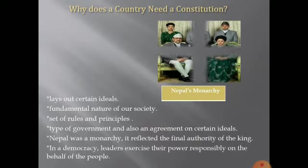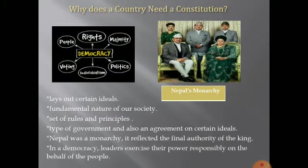We are going to learn about why does a country need a Constitution. The Constitution ensures that a dominant group does not use its power against less powerful people or groups. The Constitution helps to protect us against decisions that could have an adverse effect on the larger principles that the country believes in. A Constitution lays out the ideals that form the basis of the kind of country that we aspire to live in. It tells us about the fundamental nature of our society.